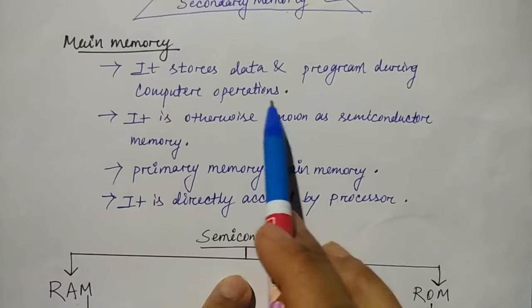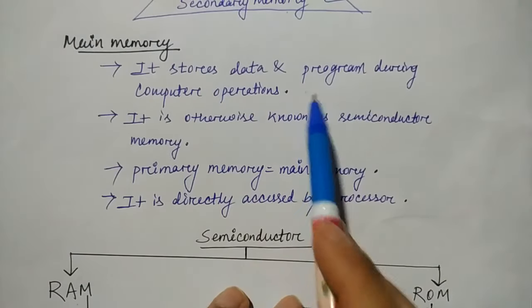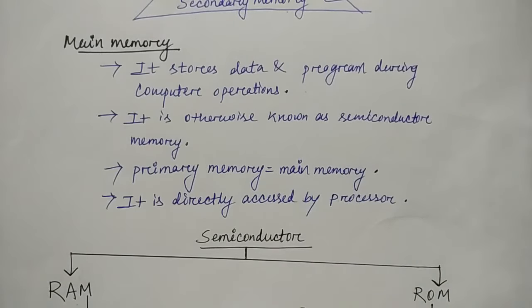Main memory stores data and programs during computer operations. Whatever you perform, if you play a song or code run, all of them are actually run in your main memory. In the main memory, it is run and stored.